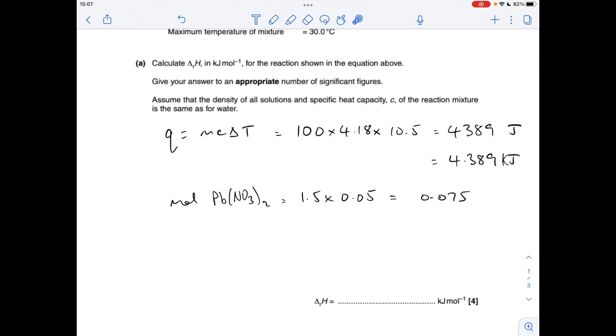Next thing we do is work out the moles of lead nitrate. Remember the KI is in excess so it's the moles of lead nitrate, concentration times volume in decimeters cubed, 0.075. So the enthalpy change for the reaction is the kilojoules divided by the moles, minus because the temperature went up. 58.52 is your calculator value and an appropriate number of significant figures will be 3 because all the other data is to 3, so minus 58.5 kilojoules per mole.